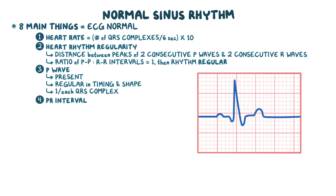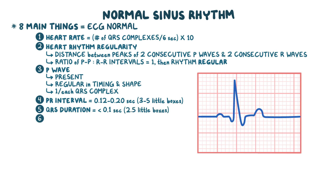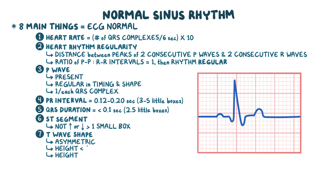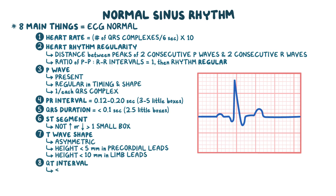Fourth, the PR interval should consistently be between 0.12 to 0.20 seconds, which is three to five little boxes. Fifth, the QRS duration should be consistently less than 0.1 seconds, or two and a half little boxes. Sixth, the ST segment should not be elevated or depressed more than one small box. Seventh, the T wave shape should be asymmetric and height should be less than 5 millimeters in precordial leads and less than 10 millimeters in limb leads. Finally, the QT interval should be less than or equal to half of a cardiac cycle, calculated by measuring the distance between two successive R waves.